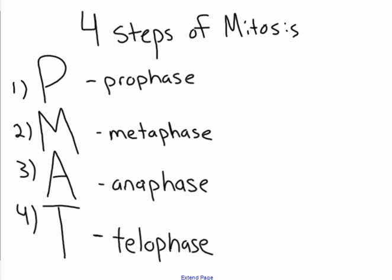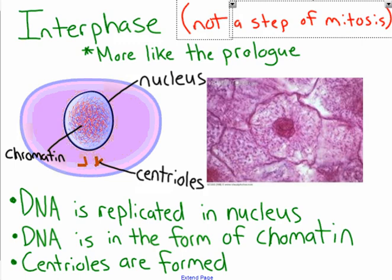Now, onto the explanation of how mitosis happens. Mitosis is going to happen in four major steps, and the acronym we use is PMAT: prophase, metaphase, anaphase, telophase. But first we have to talk about the prologue — something that happens before the story. The prologue here is interphase. Interphase is not a step of mitosis; it happens before mitosis begins.